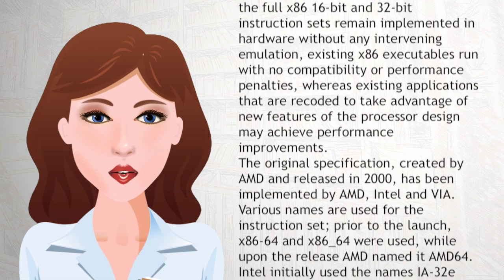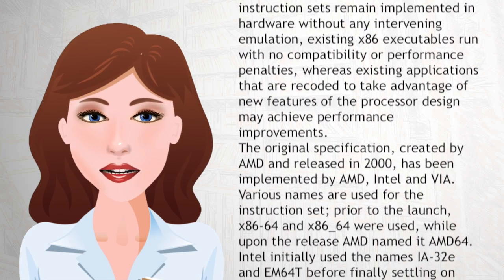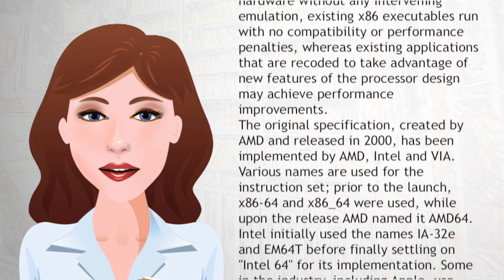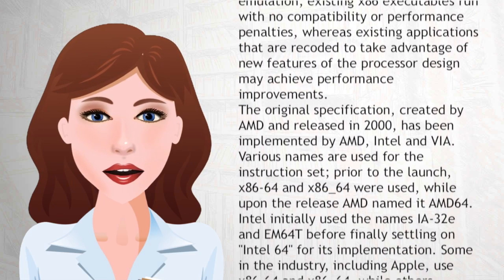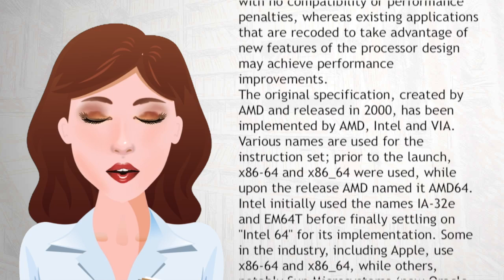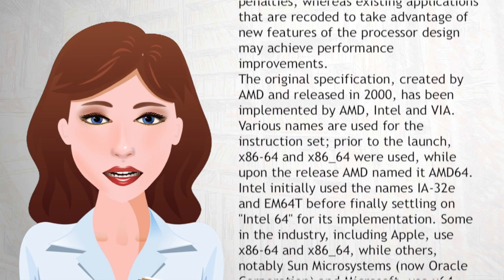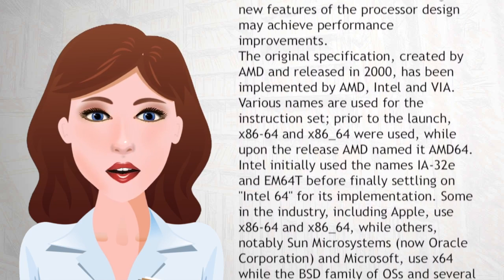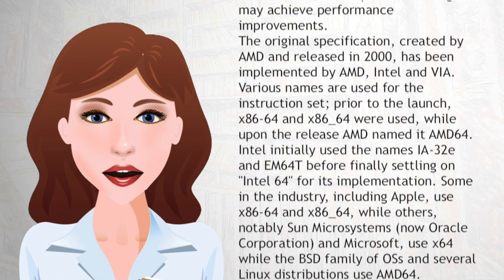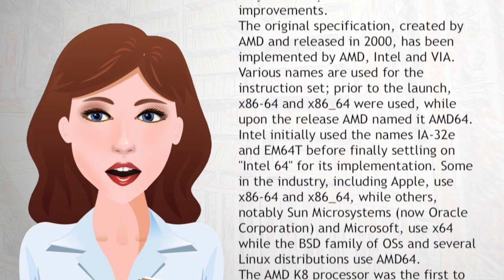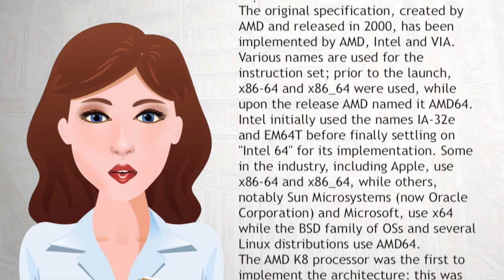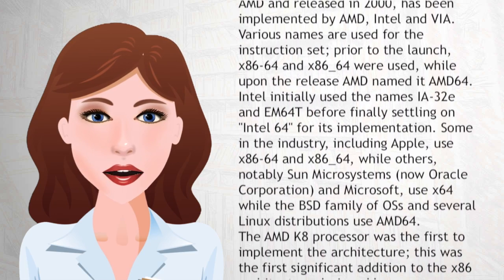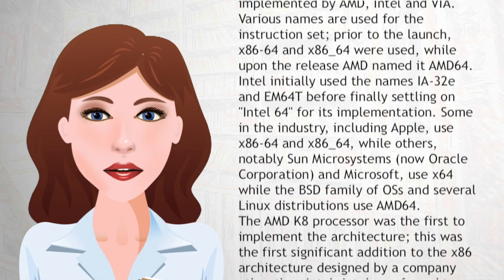The original specification, created by AMD and released in 2000, has been implemented by AMD, Intel, and VIA. Various names are used for the instruction set. Prior to the launch, X86-64 and X86-64 were used, while upon release AMD named it AMD64. Intel initially used the names IA-32E and EM64T before finally settling on Intel 64 for its implementation.